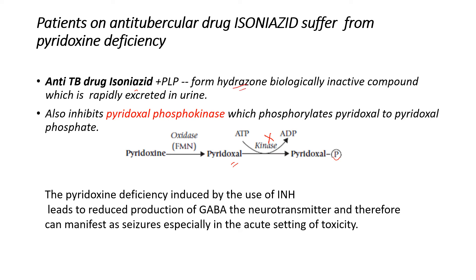The pyridoxal deficiency induced by isoniazid leads to reduced production of GABA, which is a neurotransmitter, and therefore can manifest as seizures, especially in the acute setting of toxicity.